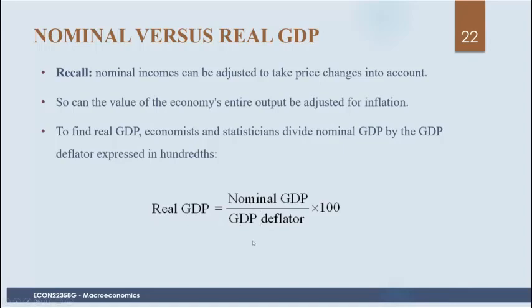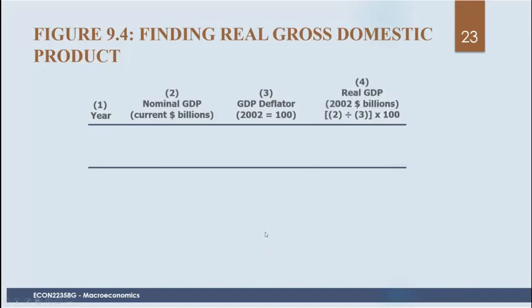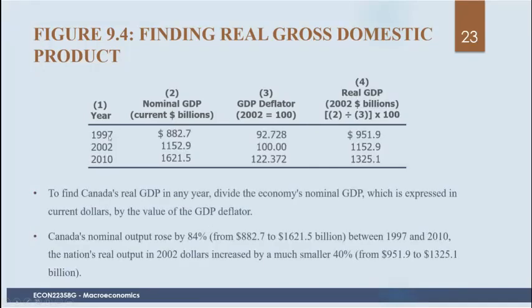Suppose we're given data for 1997, 2002, and 2010. In each year, we have the nominal GDP and the GDP deflator. We can obtain real GDP by taking nominal GDP and dividing it by the GDP deflator. If we had a price index like the CPI, we could do the same thing — just dividing by the index value, making sure to divide the index by 100.